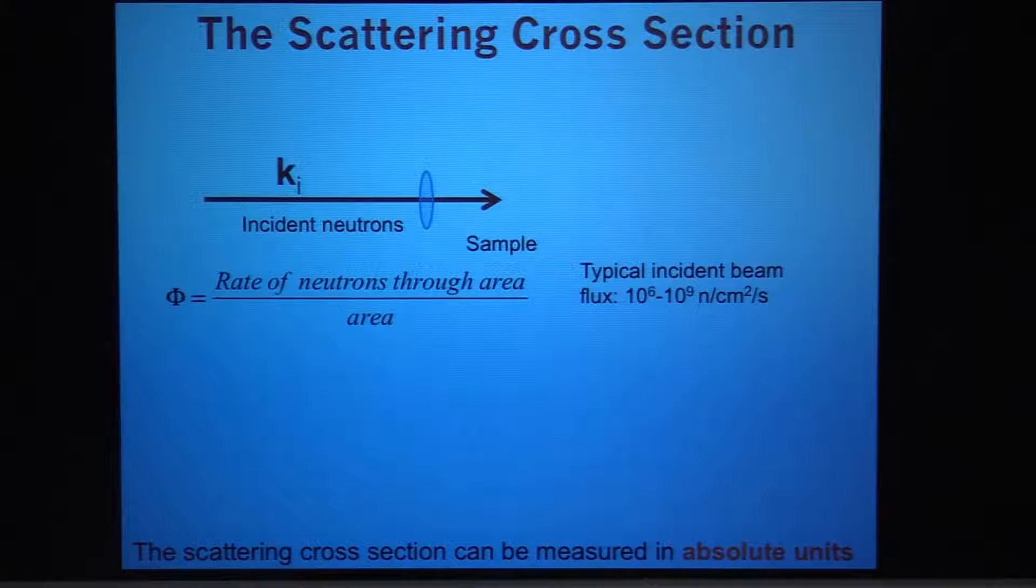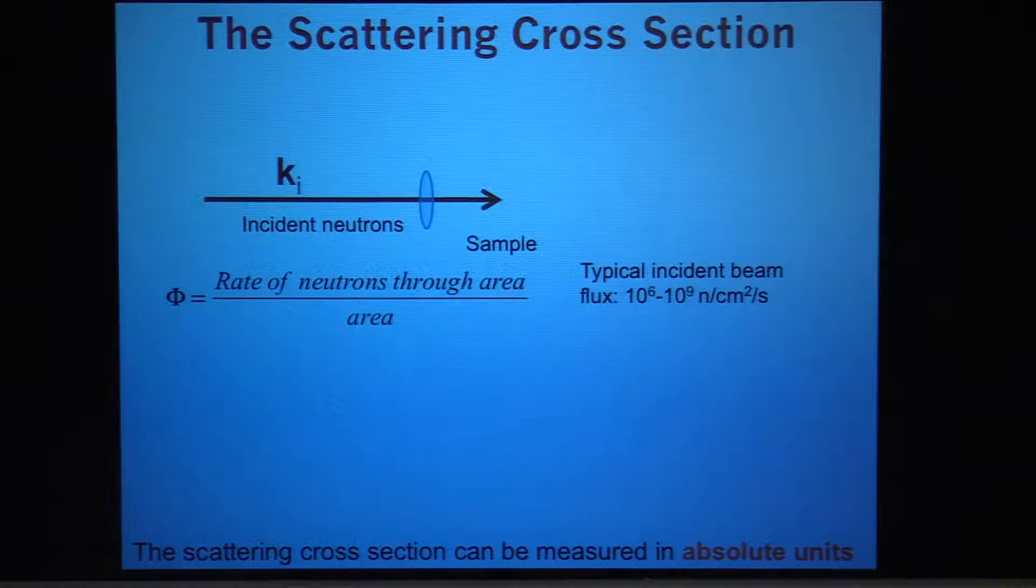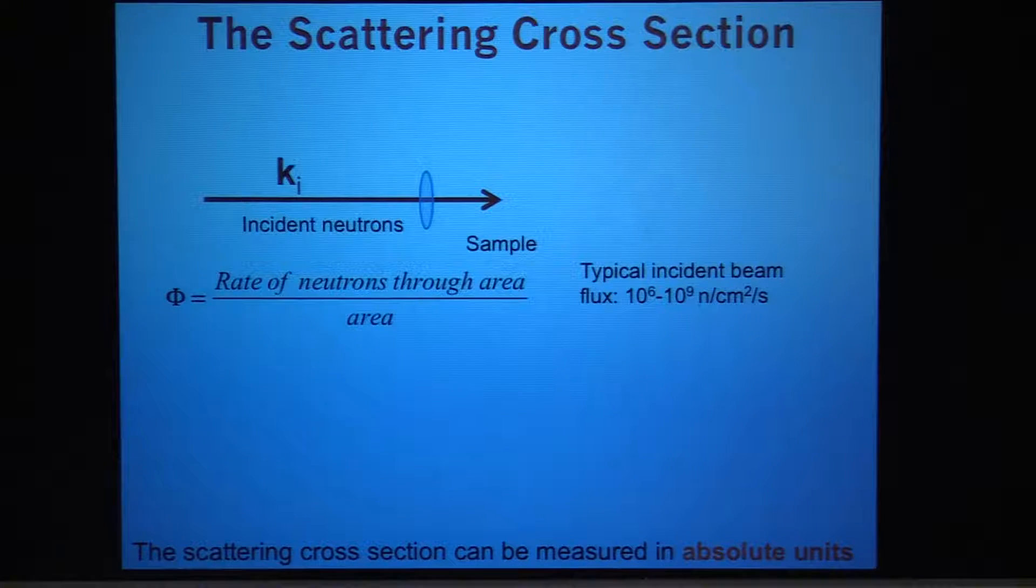So that's the neutron and its properties. Then comes the question of what is it that we're actually measuring. The good news is that it's very straightforward in the sense that all of the neutron experiments that you will see, mostly that I will talk about and those that you'll hear others talk about, essentially are a measurement of a scattering cross section. If you figure out what is meant by a scattering cross section, then you're already in pretty good shape. The actual measurement is that of a scattering cross section.